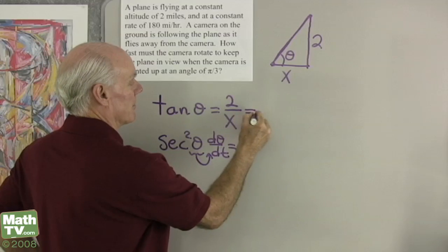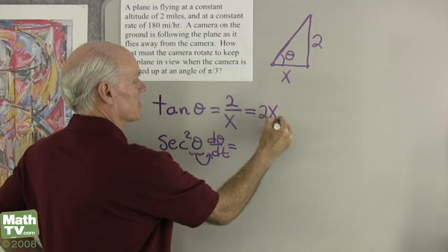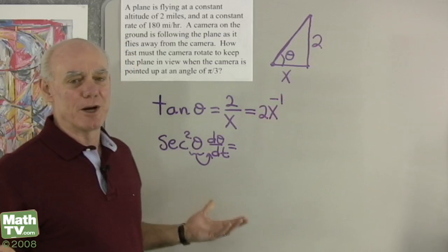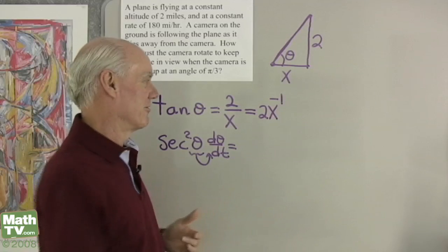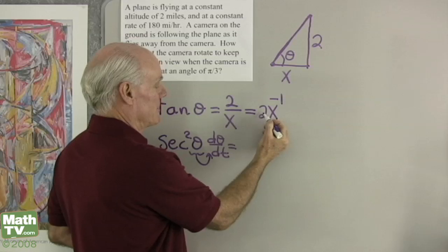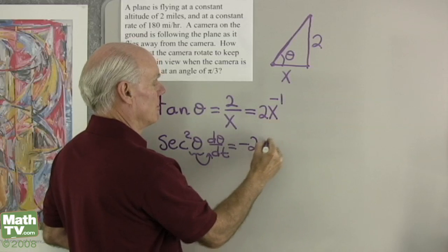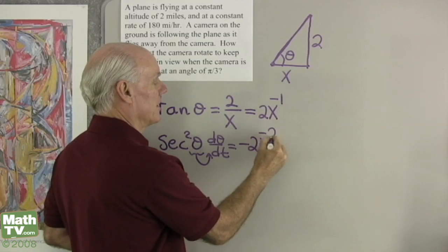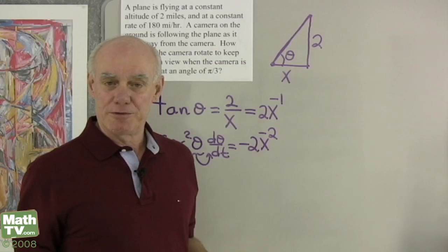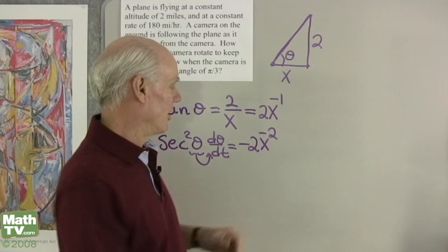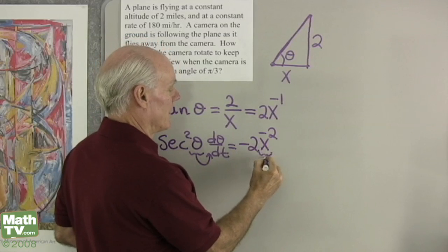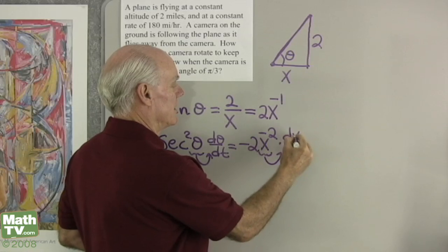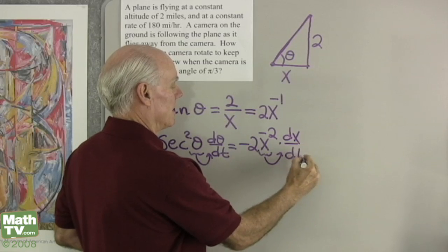That's equal to differentiating 2 over x, which I'll write as 2x to the negative 1, making differentiation a little easier. Take the exponent times the coefficient: negative 2, same base raised to a power 1 less, x to the negative 2. And since I'm differentiating with respect to t, I need the chain rule, so that gives me times dx dt.